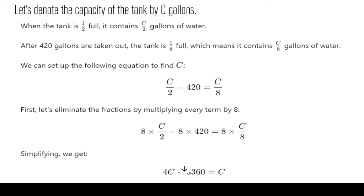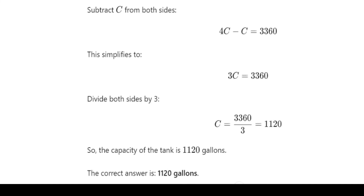First, let's eliminate the fractions by multiplying every term by eight. Eight times C over two minus eight times four hundred and twenty equals eight times C over eight. Simplifying, we get four C minus three thousand three hundred and sixty equals C. Subtract C from both sides: three C equals three thousand three hundred and sixty. Divide both sides by three: C equals one thousand one hundred and twenty. So the capacity of the tank is one thousand one hundred and twenty gallons.